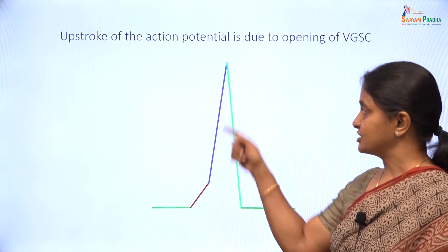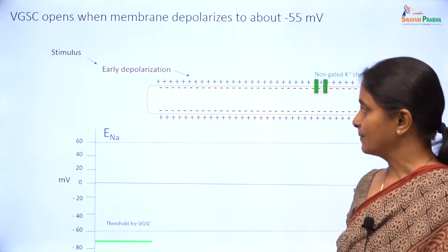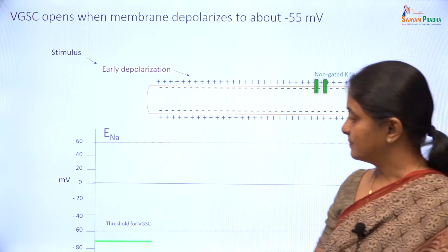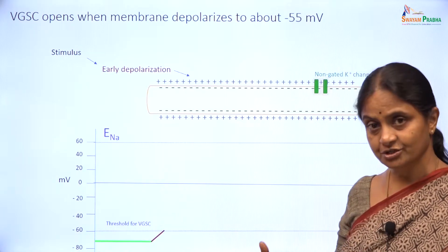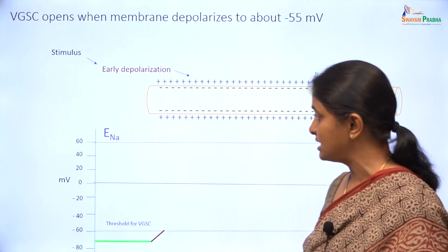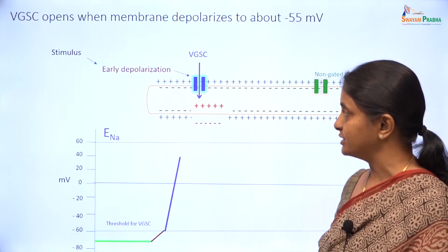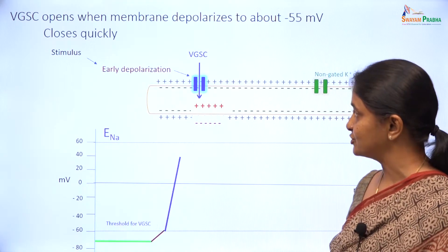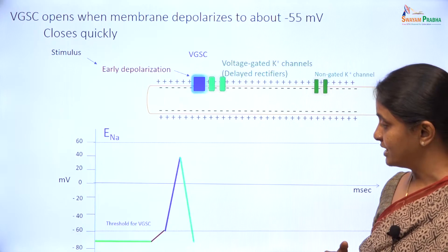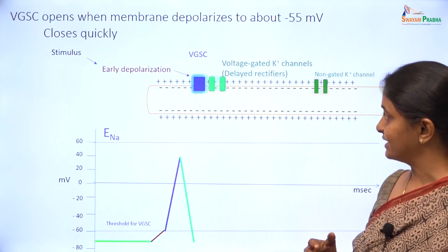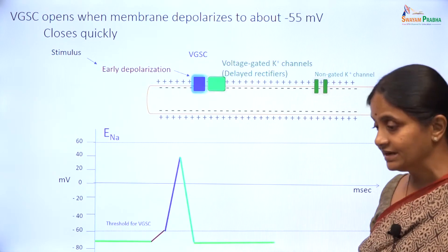We are moving on to a discussion on the upstroke of the action potential. We know it is due to voltage gated sodium channels. The membrane is at rest and when there is a stimulus, there is an early depolarization due to different reasons in different locations, and that will cause opening of voltage gated sodium channels that will take the membrane towards the sodium equilibrium potential. These channels close quickly and delayed rectifiers open up to cause repolarization. After that the delayed rectifiers will also close and the membrane will continue to remain in the resting state because of the leak potassium channels.